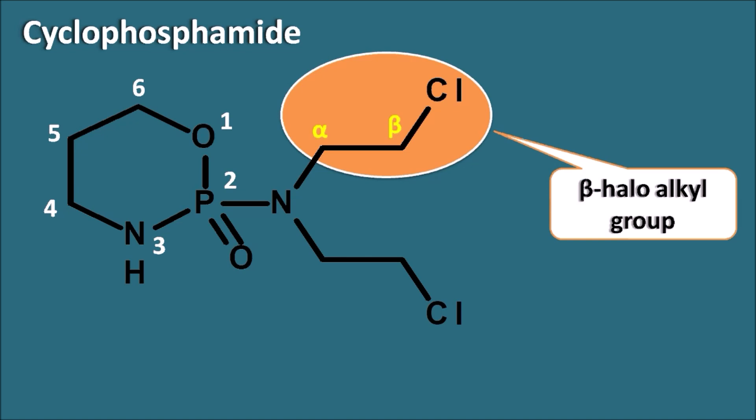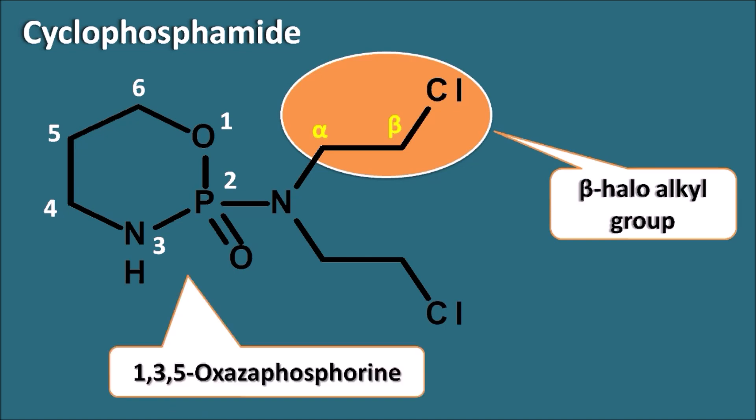It also has a ring system that we call the 1,3,5-oxa-aza-phosphorinane system. This is the complete structure of cyclophosphamide.